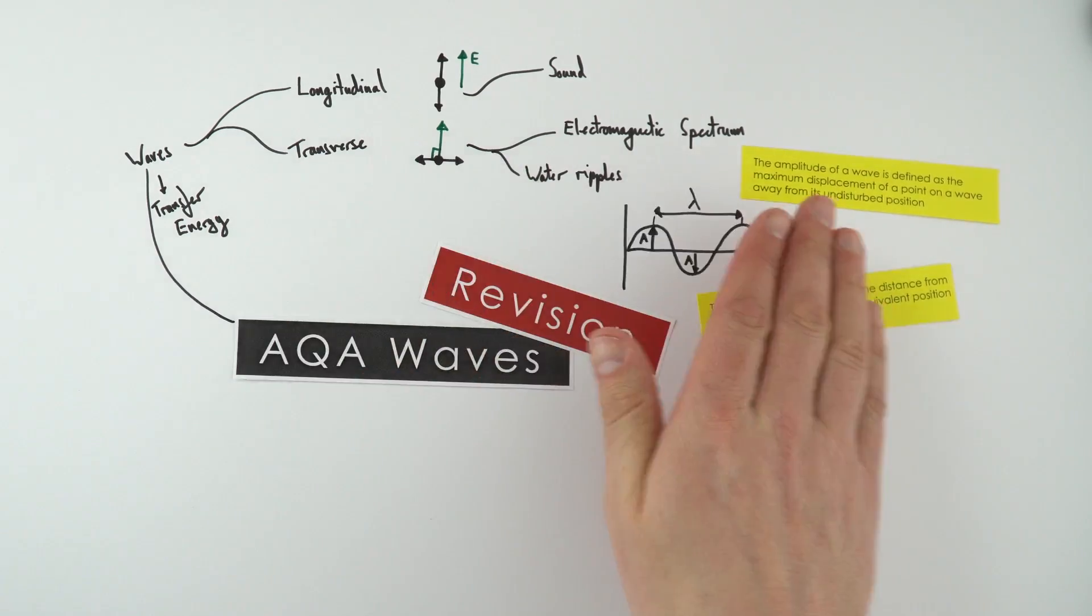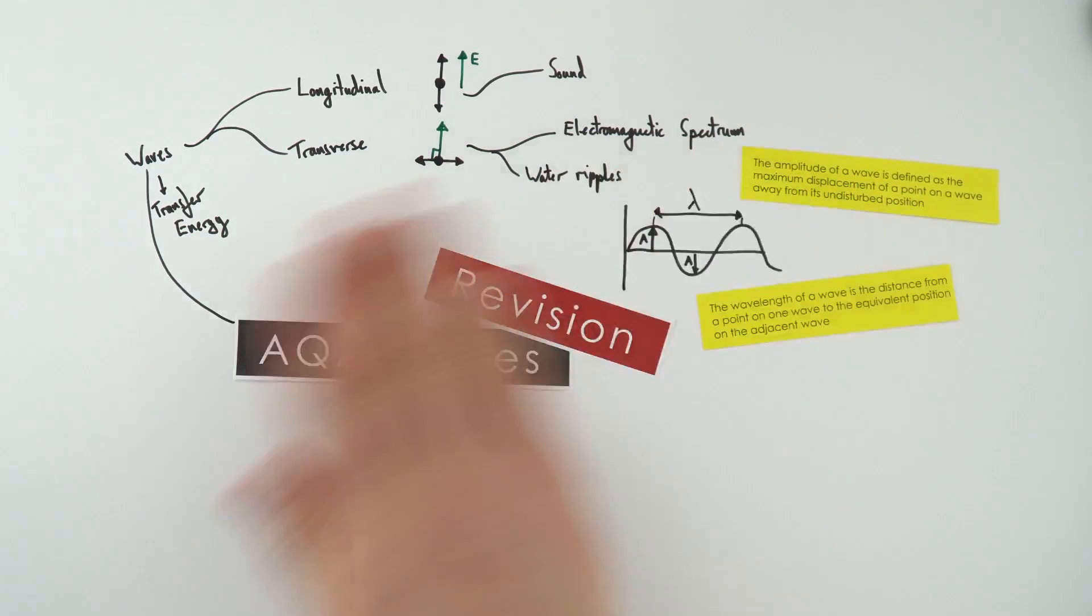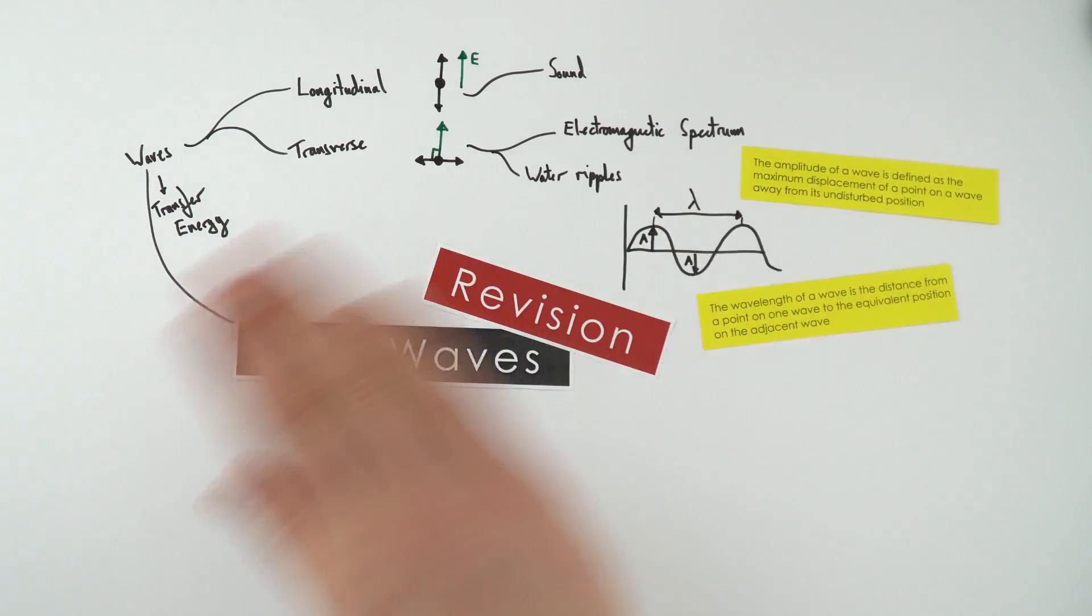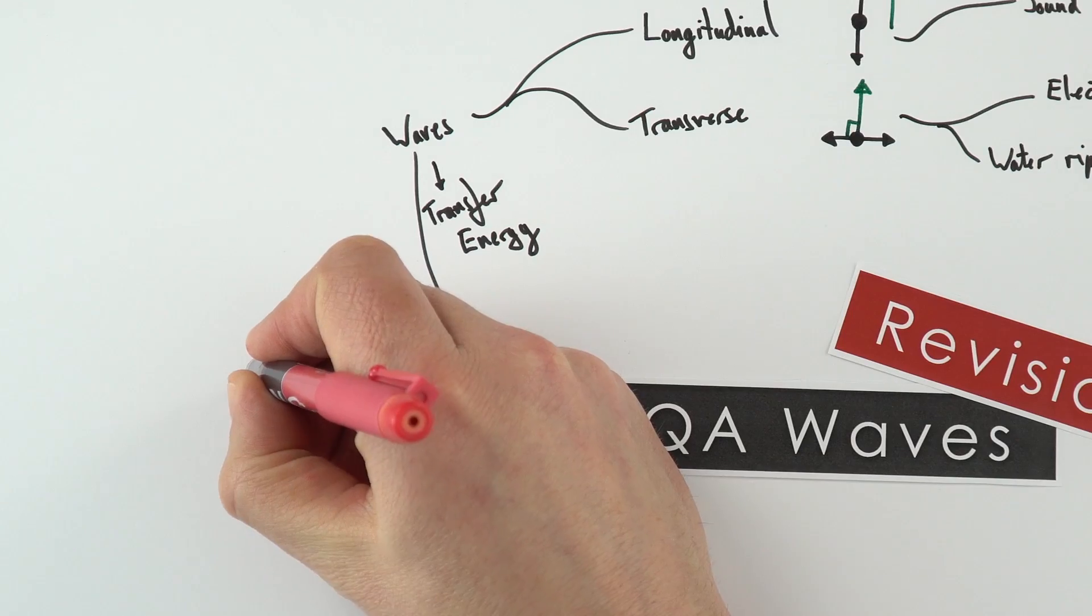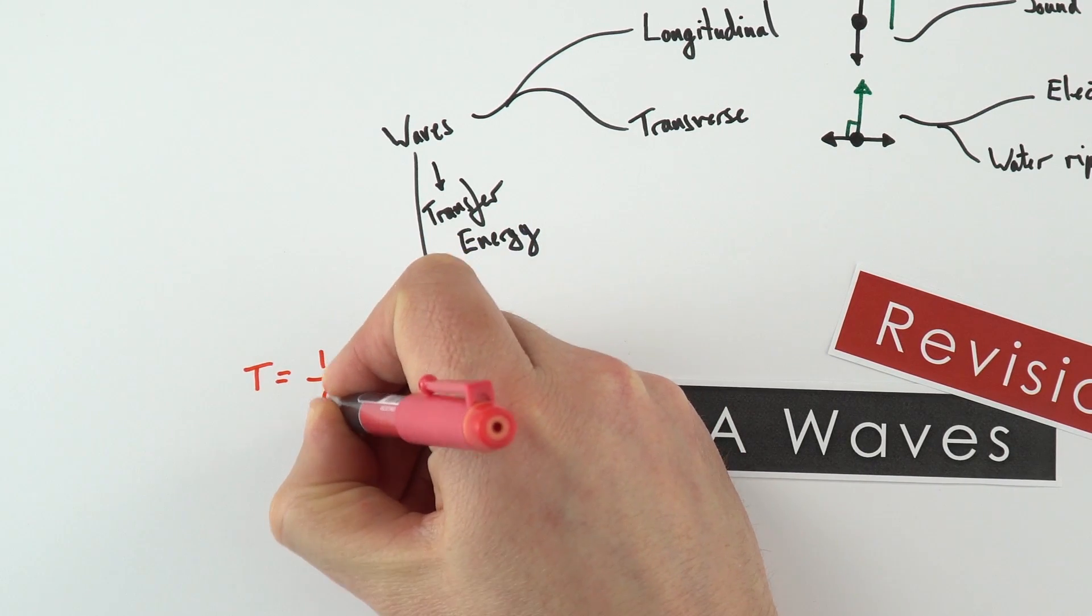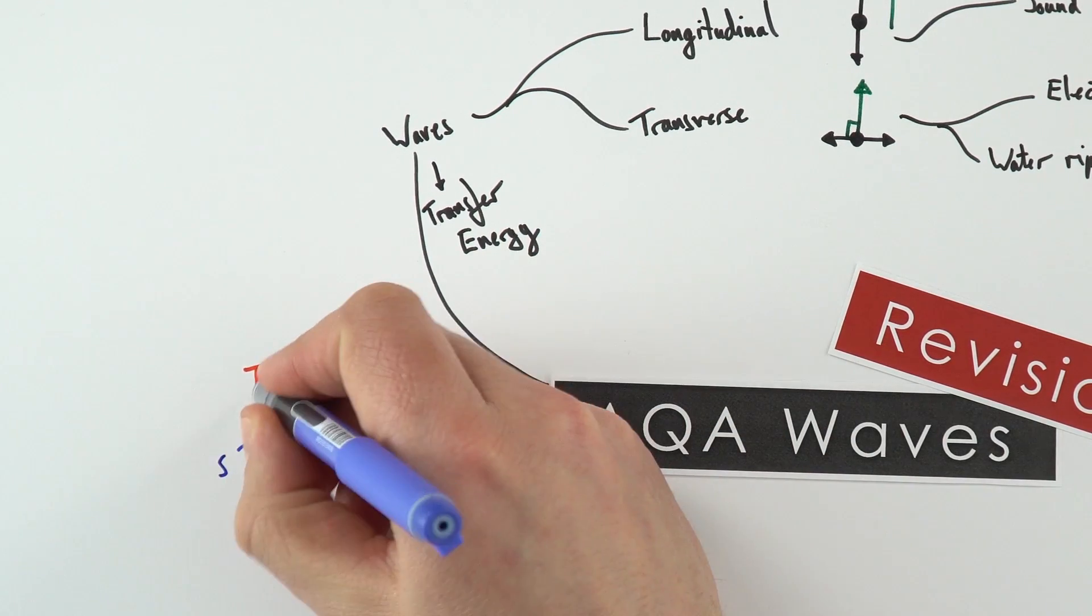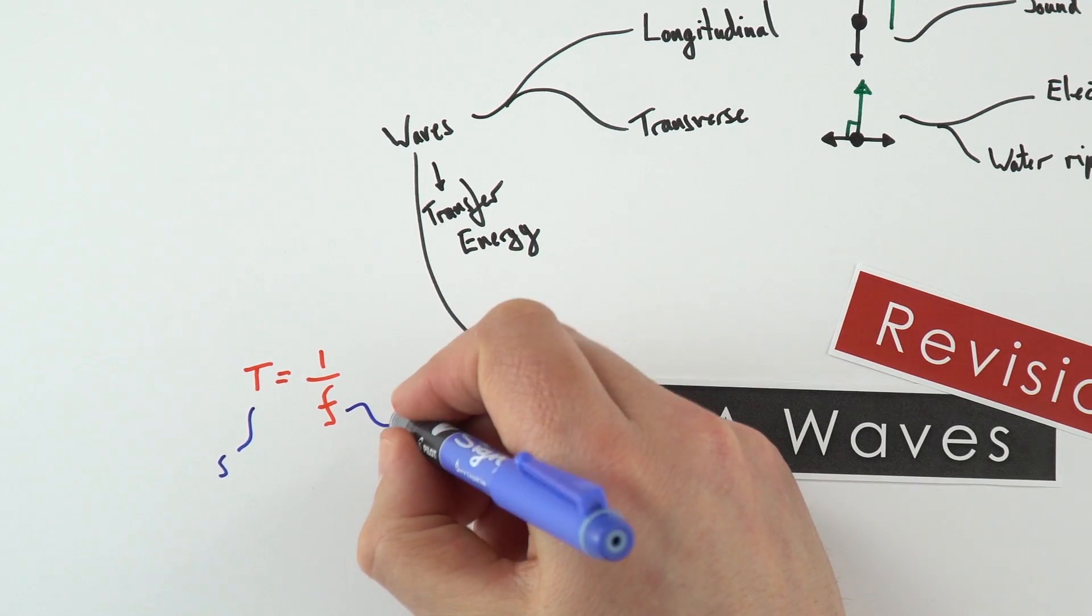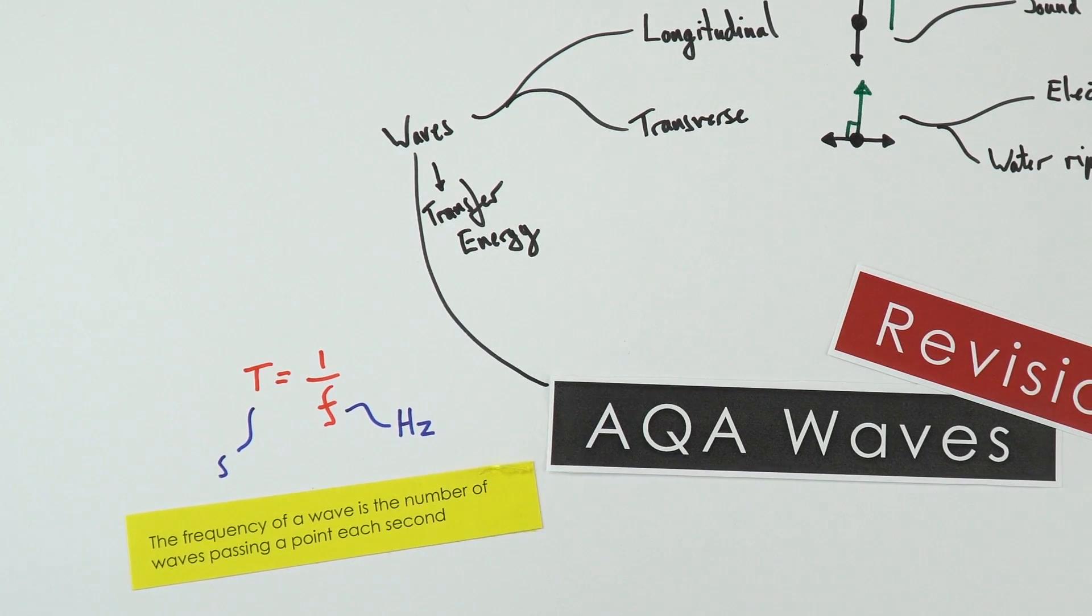There's a link between how long it takes for each wave and the amount of waves per second. The amount of waves per second is frequency. The time period of a wave is equal to one divided by the frequency. We measure time period in seconds (capital T) and frequency, the number of cycles per second, in hertz. The frequency of a wave is the number of waves passing a point each second.